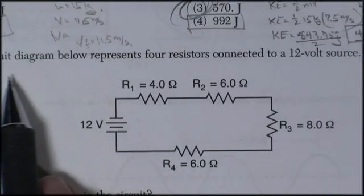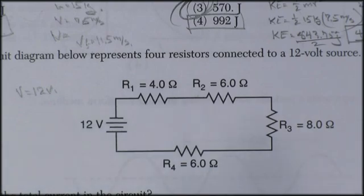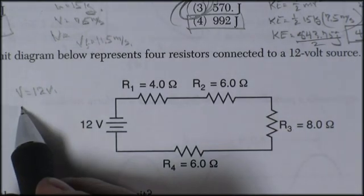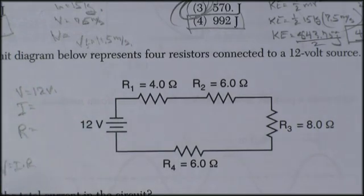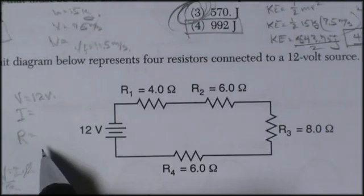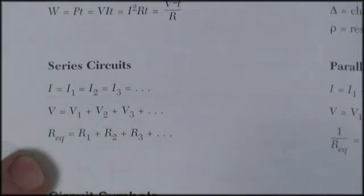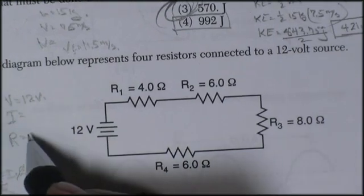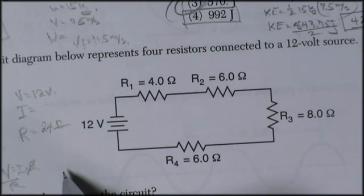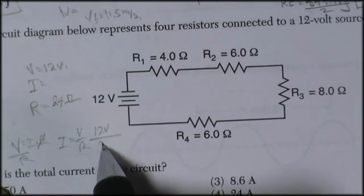Question forty-five. The circuit diagram represents four resistors connected to a twelve volt source. So the total voltage is going to be twelve volts. I've got these four resistors. So the question asks what's the total current? Total current resistance. So Ohm's law says voltage is current times resistance. So current would be equal to voltage divided by resistance. So I need to know the total resistance. And in a series circuit, the resistors add. So I can take four plus six is ten plus eight is eighteen plus six is twenty-four. So the total resistance is twenty-four ohms.